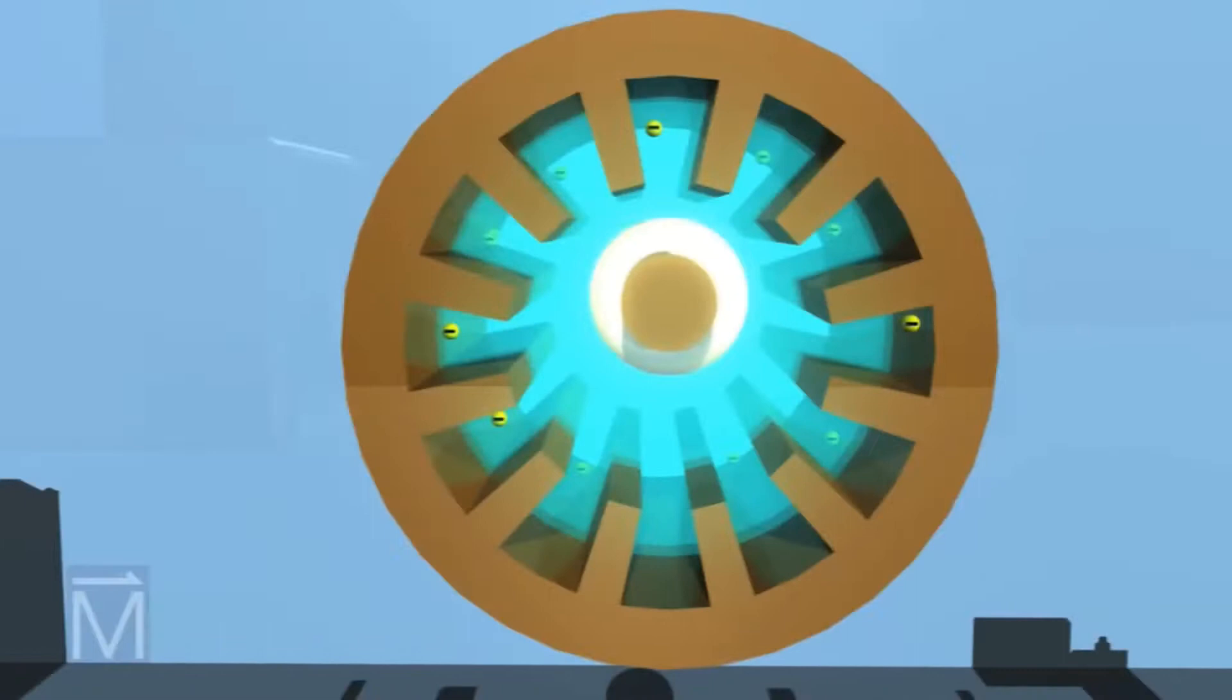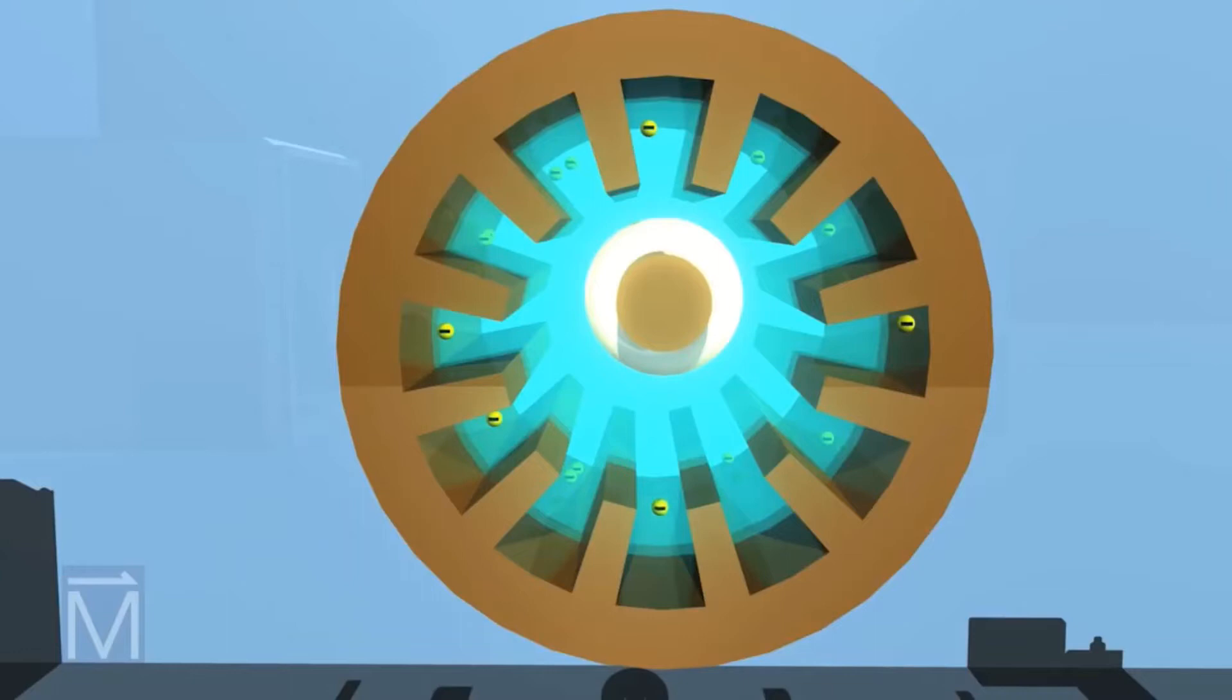Microwaves are actually created by a device in a microwave oven called a magnetron. The magnetron is a high-powered vacuum tube that works as a self-excited microwave oscillator.